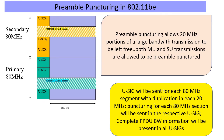So what is preamble puncturing? Preamble puncturing allows an AP or a station to avoid sending in whole 20 megahertz sections while still using other parts of the bandwidth. For example, in a 160 megahertz channel you could puncture say this 20, this 20, and possibly other 20s as well. This was technically introduced in 11AX but really found no traction in practice because it was allowed only for multi-user transmissions.